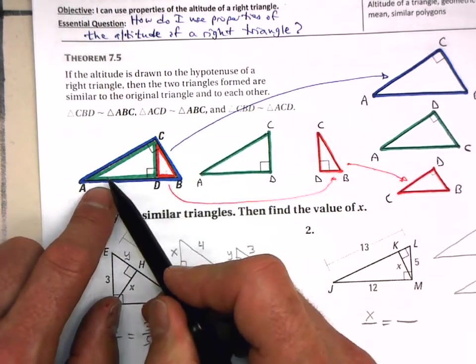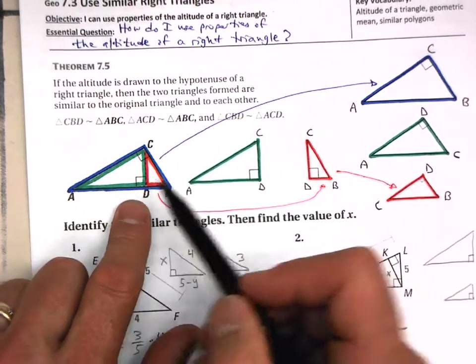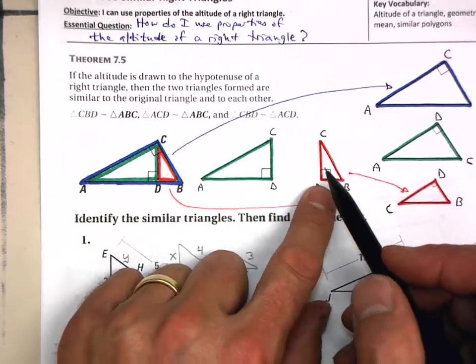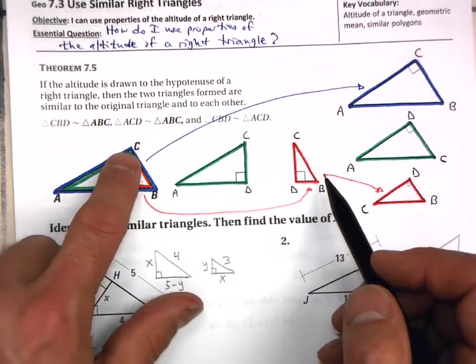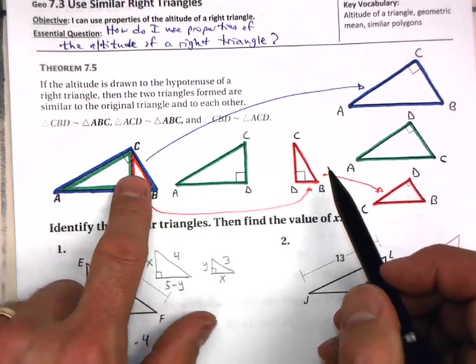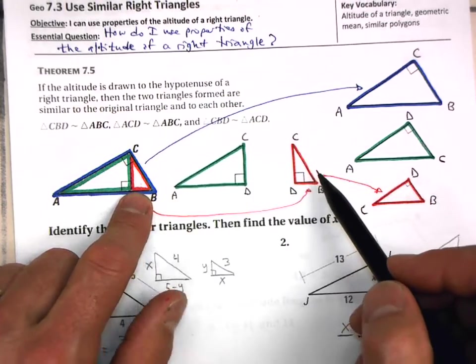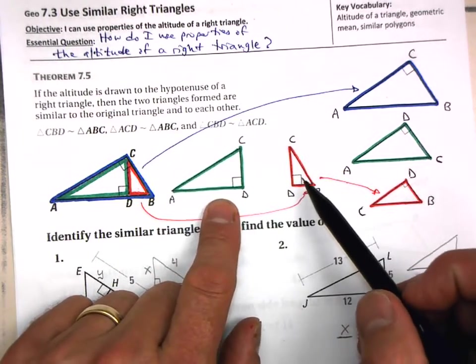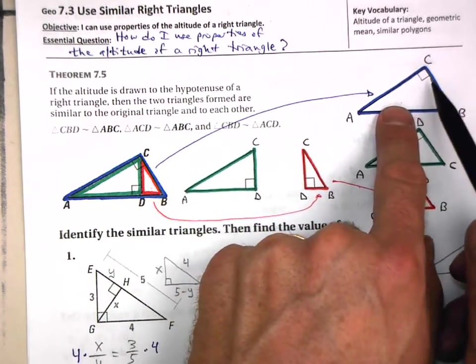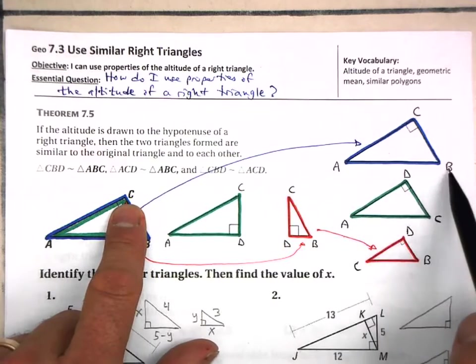So let me show you. Let's take this green triangle, right triangle, and let's take it out and just slide it over here. And then let's take this red triangle and slide it on over here. So here are your three different right triangles. You have the larger blue on the outside, you have your medium green on the left here, and then your smaller red.